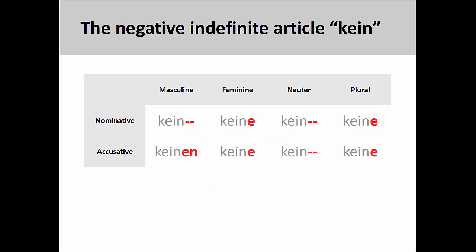We use nicht to negate adjectives, adverbs, and clauses. When negating nouns, however, we must use the negative indefinite article kein. You will notice that the declension pattern for kein is exactly the same as for the indefinite article ein. You may want to quickly review the presentation on indefinite articles before proceeding with this one.